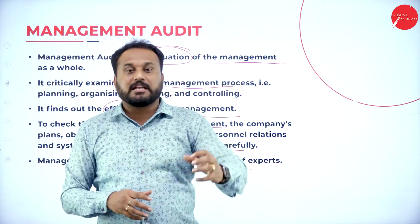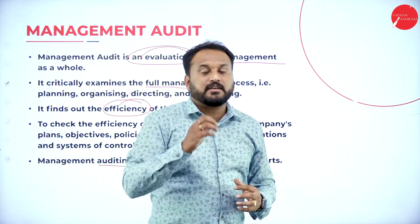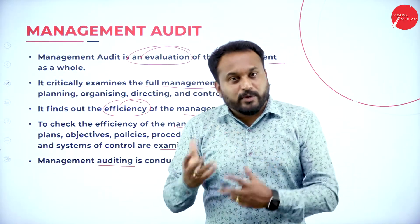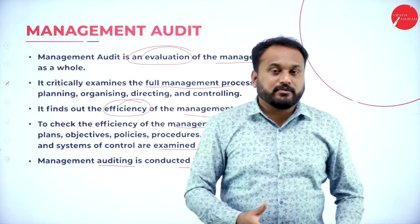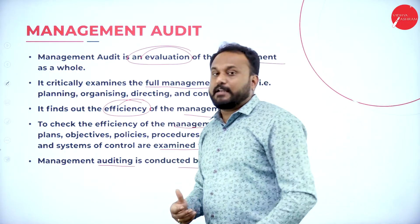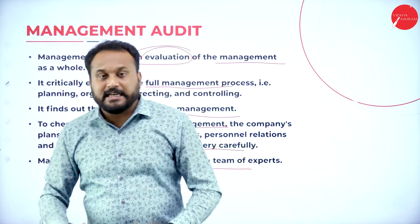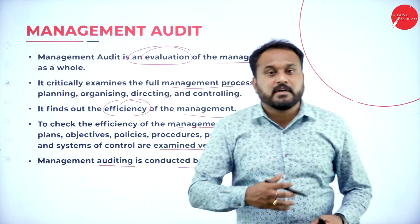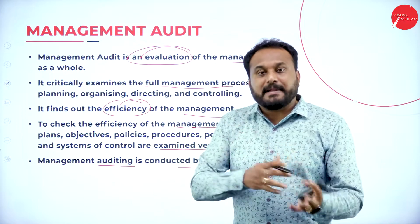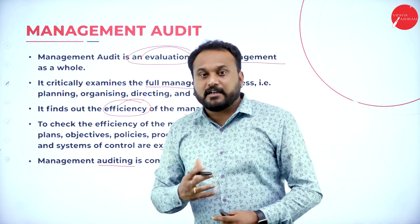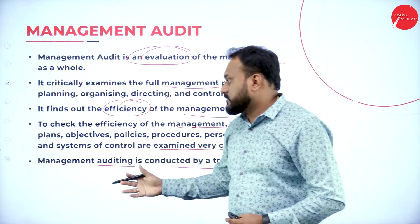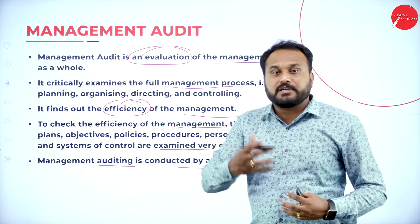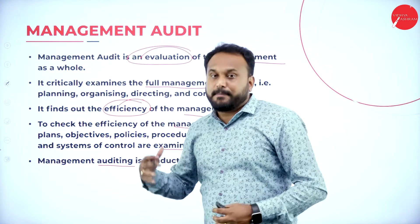In a management audit, you are supposed to check each and everything the management is doing and whether they are capable of doing it. Through management audit, we can know where we really stand and where we are supposed to go. It covers the entire process of management functions — planning, organizing, staffing, directing, and controlling. It also helps set the types of plans like objectives, policies, procedures, methods, and rules properly.